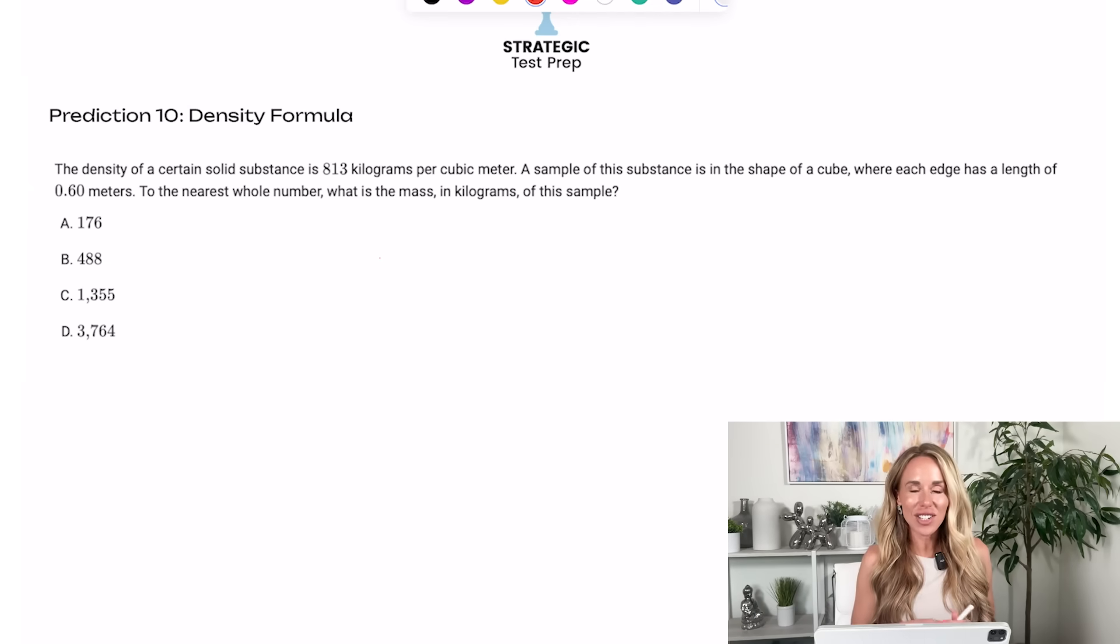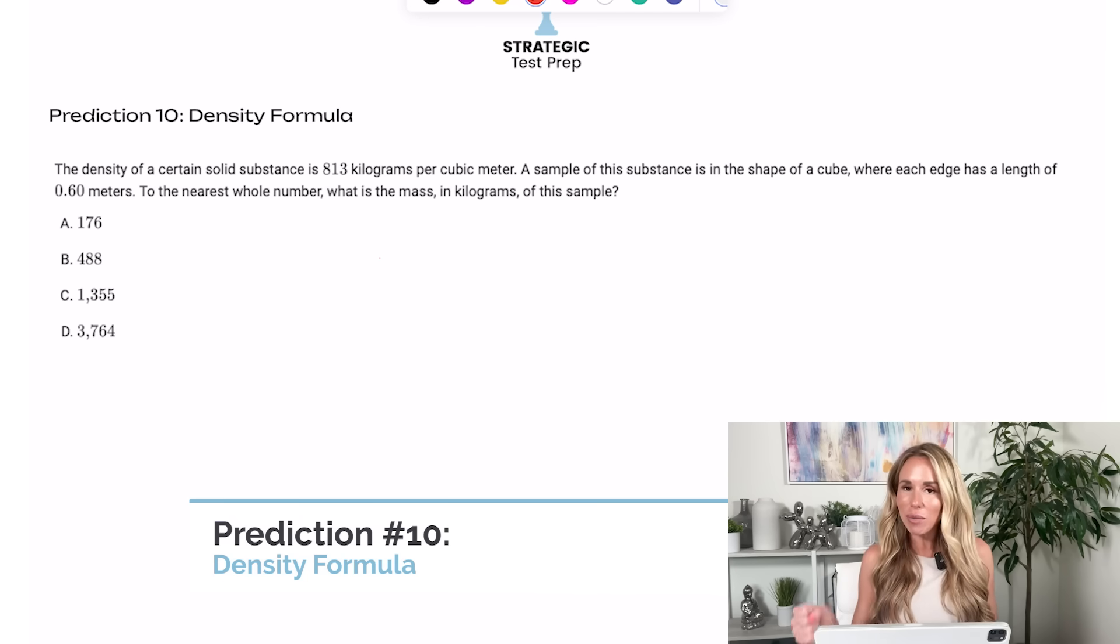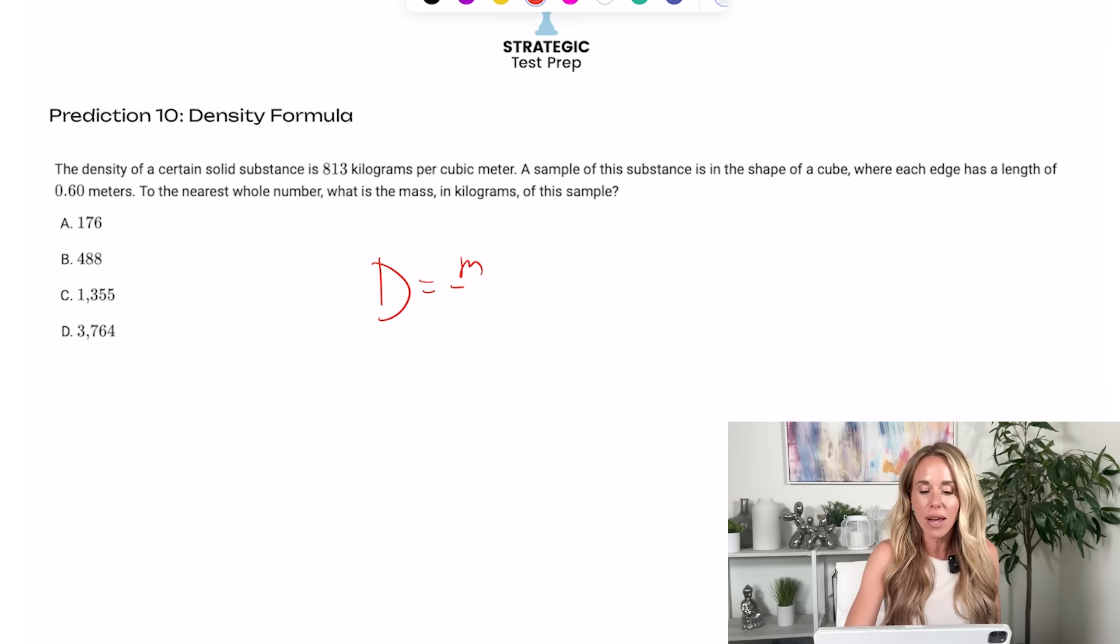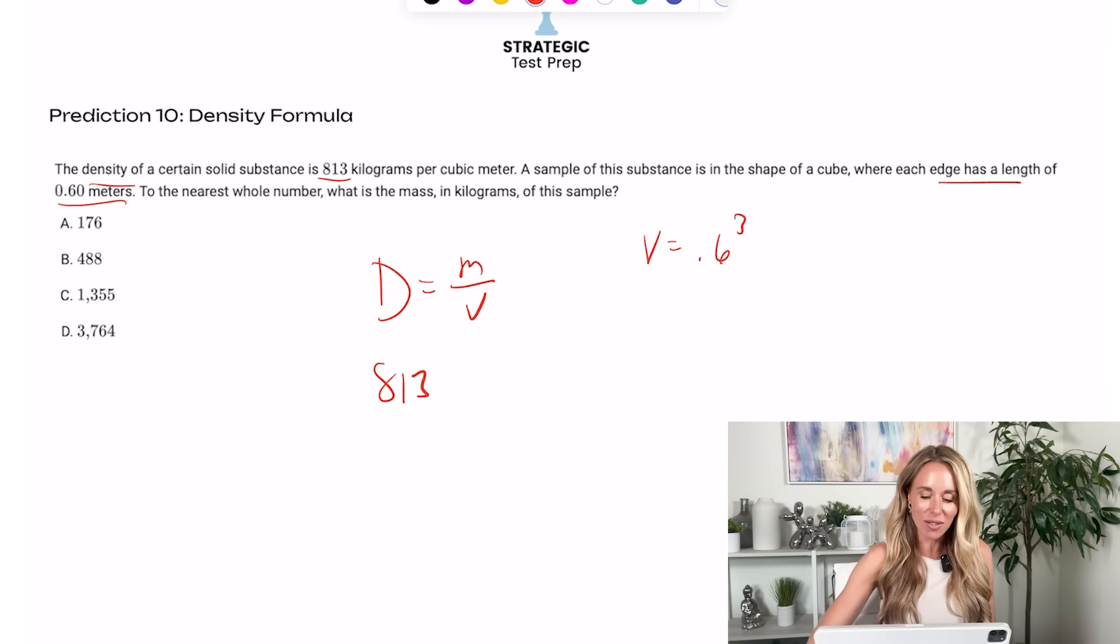All right. My last and final prediction. I think that you're going to have a density formula question on your test. This is risky for me to predict this because these do not come up that often, but I noticed that they added a new one into the question bank and I just have a feeling it's going to come up again because it hasn't come up in a while. So it's important that you know that the density equals the mass divided by the volume. If you know that formula, then it's smooth sailing. It's not on your reference sheet. So you have to know that. So when they say the density is 813, you're going to put that in for D. Then they said the edge has a length of 0.6 meters. So when you get volume of a cube, you do 0.6 cubed. So let's see what that is.